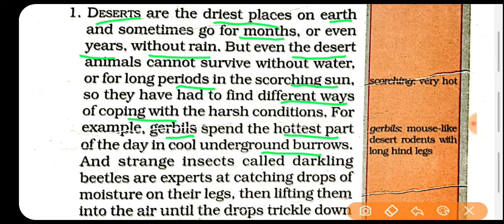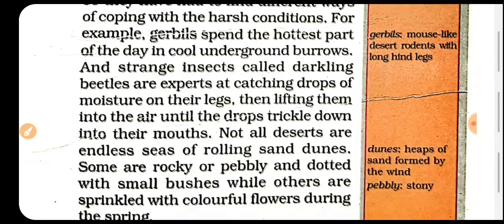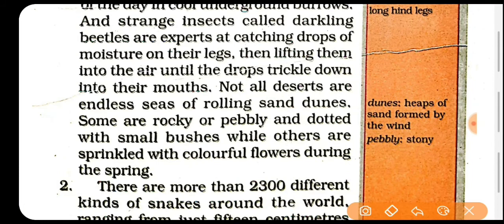And strange insects, jin ko hum darkling beetle bhi kehte hain, woh kya karte hain? Our experts at catching drops of moisture on their legs. Jo beetles hain woh jo moisture hota hai — paani ki jo boonday hoti hain — raat mein ya ped se jo moisture tapakta hai, us ko apne pairon pe hold karti hain. Aur phir apna pair uthaa kar tab tak lift up karte hain jab tak ki woh drop unke mouth mein aa kar nahi gir jaati.